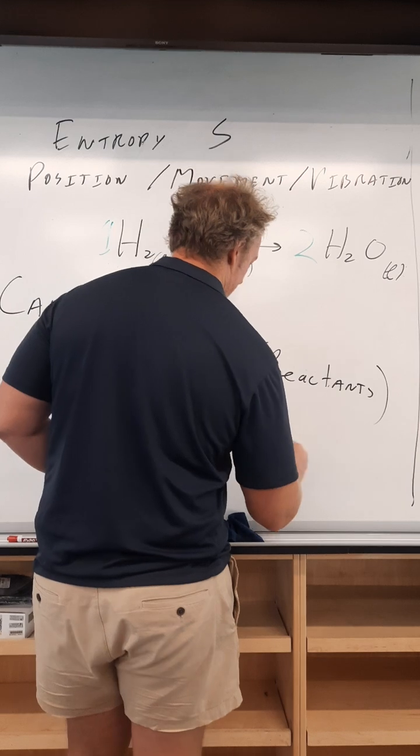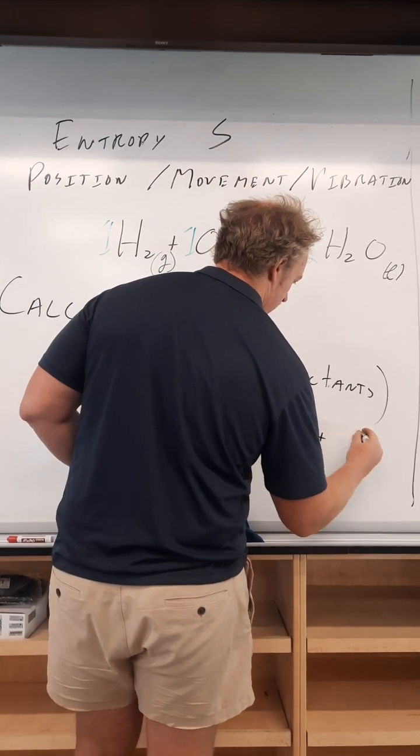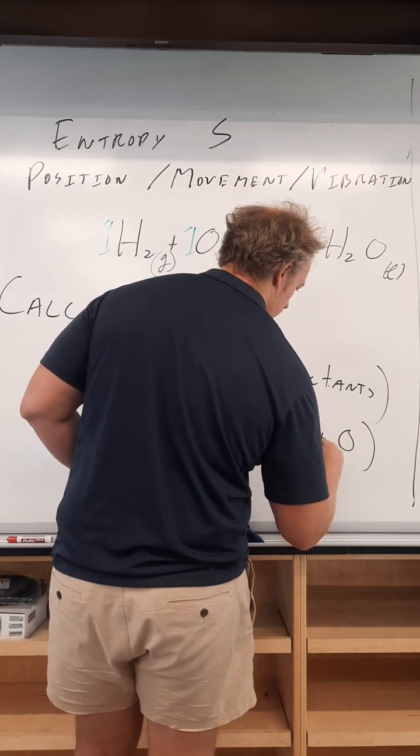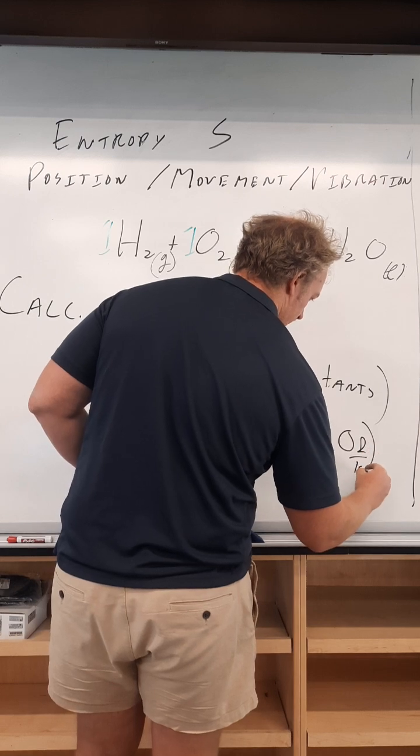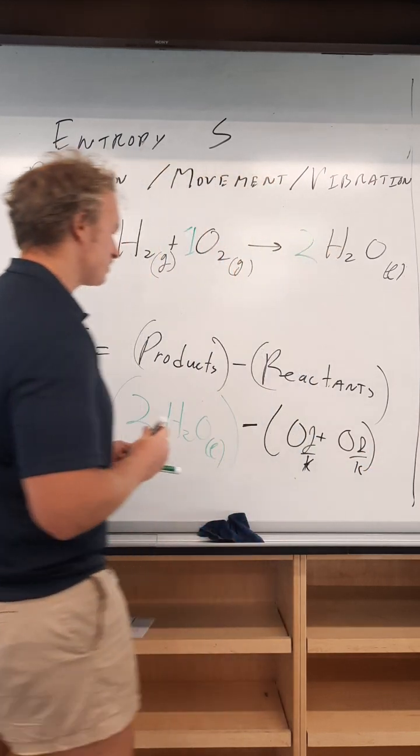So the reactants are going to be zero plus zero joules per Kelvin, joules per Kelvin, because those are the units for entropy here.